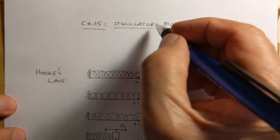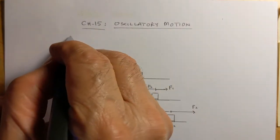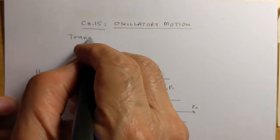Now we look at Chapter 15, which is oscillatory motion or vibratory motion. In here we have already seen there are three kinds of motion.